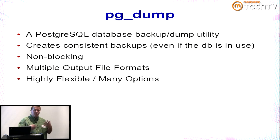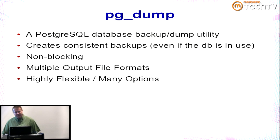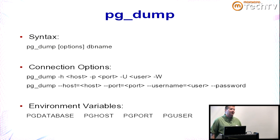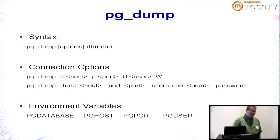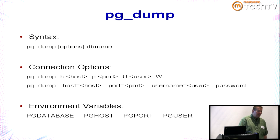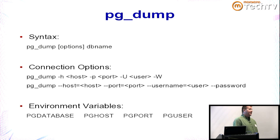The syntax for pg_dump is pg_dump followed by optional connection options and flags telling it how to operate. The connection options are the standard psql options: -h for host, -p for port, user, and -W to prompt for a password. pg_dump and pg_dumpall both respect the standard environment variables PG_DATABASE, PG_HOST, PG_PORT, and PG_USER for the connection.